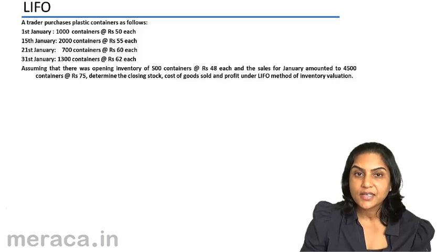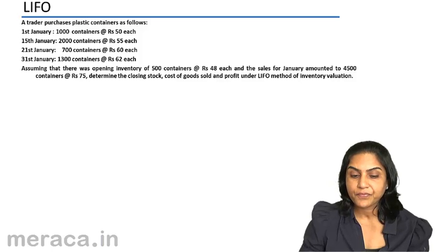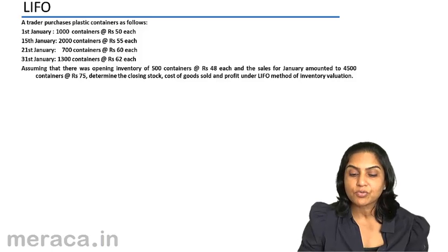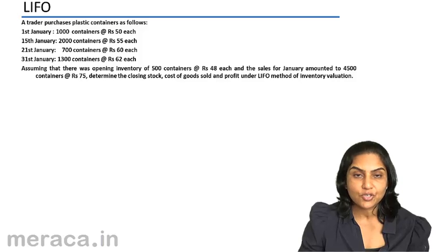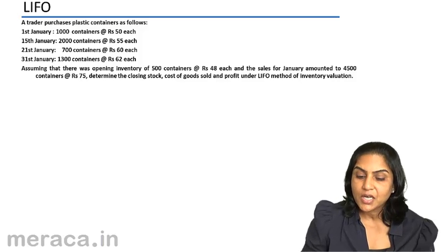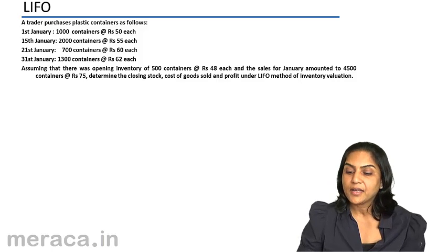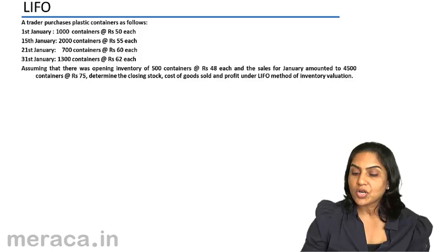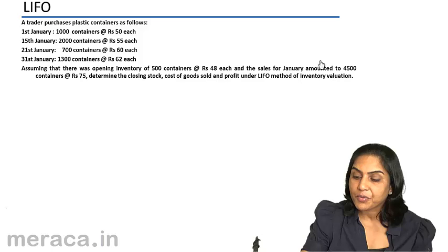Let us now try and understand LIFO — Last In, First Out. It's the same example: 1,000 containers at Rs 50, 2,000 containers at Rs 55, 760, and 1,362. These were the purchases. Assuming there was an opening inventory of 500 containers at Rs 48, and the sales amounted to 4,500 containers at Rs 75, determine the closing stock, cost of goods sold, and profit under LIFO method of inventory valuation.